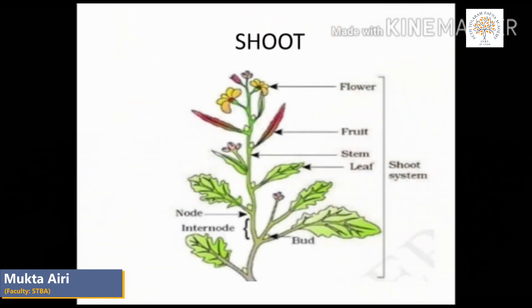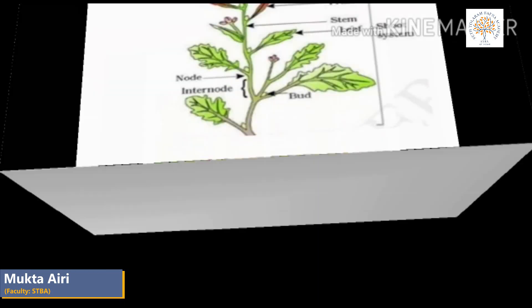Shoot. The shoot system of a plant grows above the ground. The shoot system consists of stem, leaves, flowers, buds, fruits, and branches. The different parts of a shoot system are as follows.